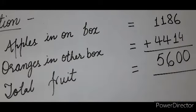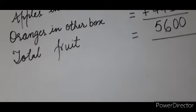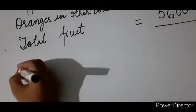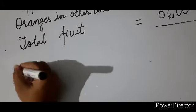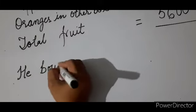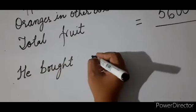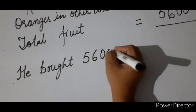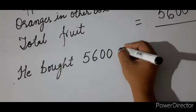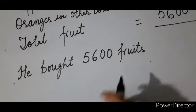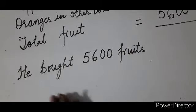After writing that, write the answer: 'He bought 5600 fruits.'